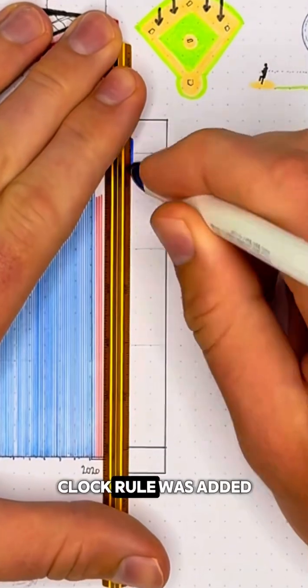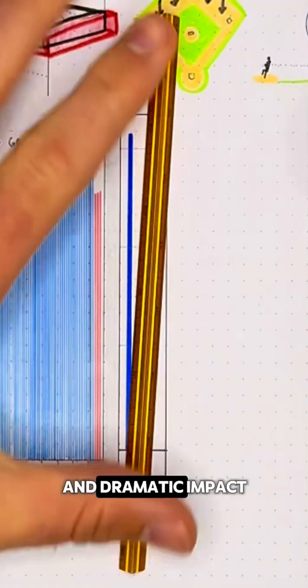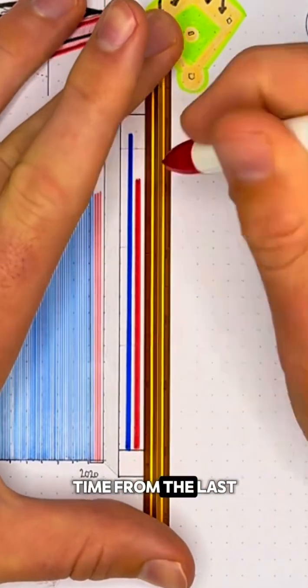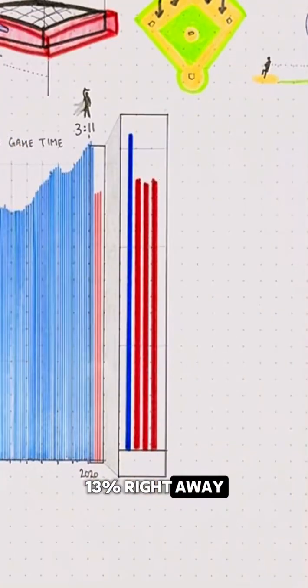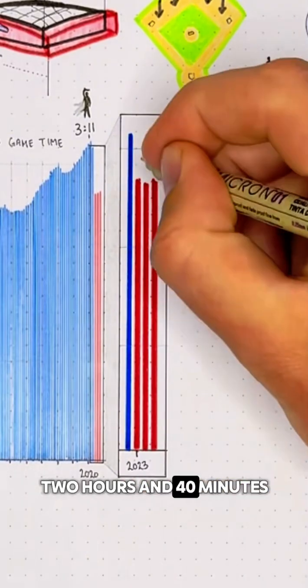When this new pitch clock rule was added in 2023, it had an immediate and dramatic impact, with the average game time from the last three years shown in red dropping 13% right away, and stabilizing it around 2 hours and 40 minutes.